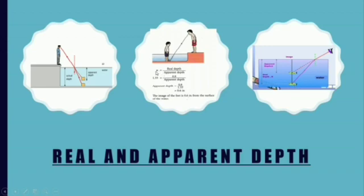The refractive index equals the ratio of real depth to apparent depth. Given any two of these three values we can find the third. For example, if the image of the feet appears 0.6 metres from the water surface, that is the apparent depth used in the calculation.